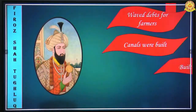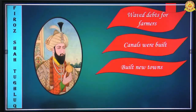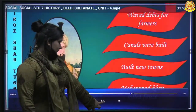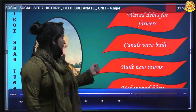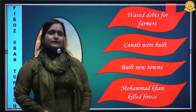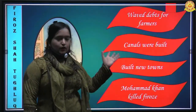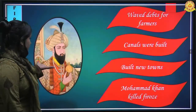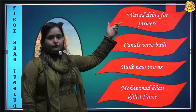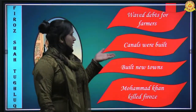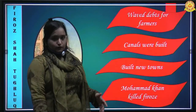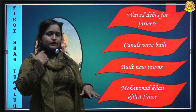Firoz Shah Tughlaq created charities for those who could not earn enough or have food on time. He banned the taxation system for weavers, laborers, and house helpers, and paid the debts of farmers. He built many canals and founded new cities like Ferozabad, Ferozpur, Hissar, and Fatehabad. However, his son Muhammad Khan eventually revolted against him, and Firoz Shah Tughlaq died in 1388.